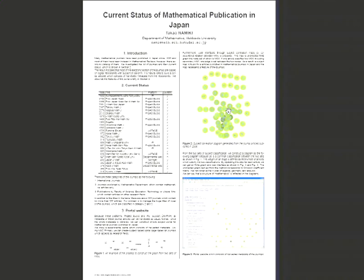In this poster, I'd like to show the current status of mathematical publications in Japan and the portal website on their electronic editions using OAI-PMH.